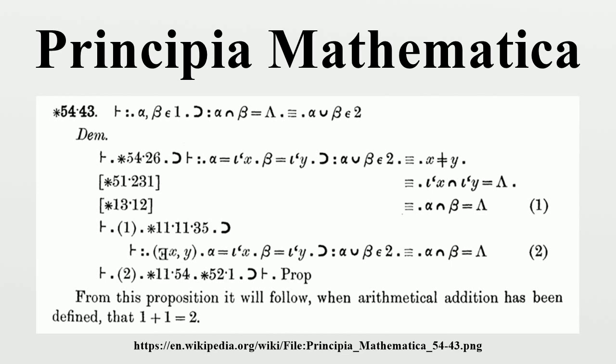However, in 1931, Gödel's incompleteness theorem proved definitively that PM, and in fact any other attempt, could never achieve this lofty goal. That is, for any set of axioms and inference rules proposed to encapsulate mathematics, either the system must be inconsistent, or there must in fact be some truths of mathematics which could not be deduced from them.